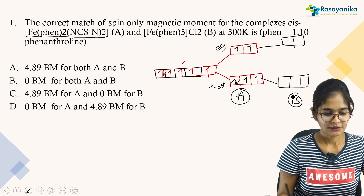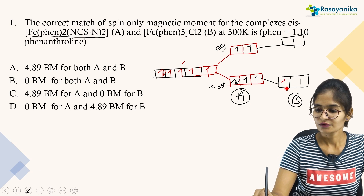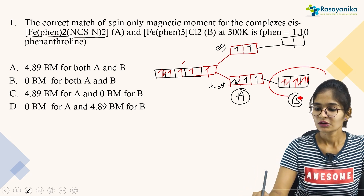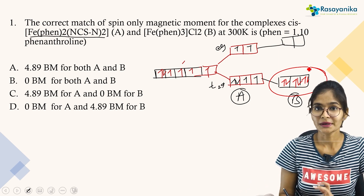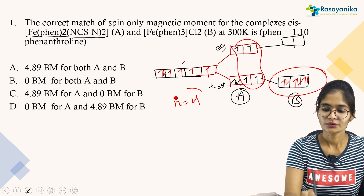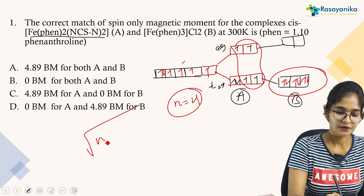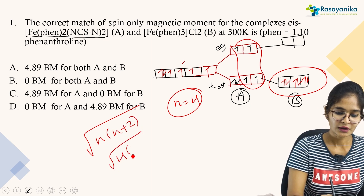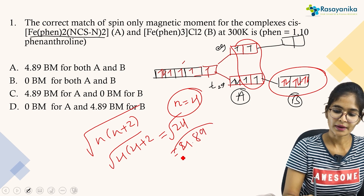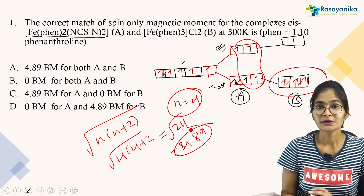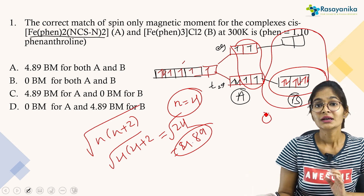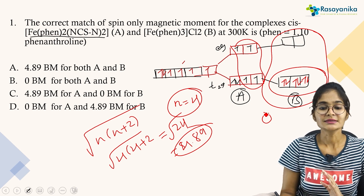Now for complex B, again you have 6 electrons to fill. The T2G orbitals are completely filled with all 6 electrons, leaving 0 unpaired electrons. For complex A (high spin, N = 4), the spin-only magnetic moment is √(4 × 6) = √24 = 4.89 Bohr magneton. For complex B with 0 unpaired electrons, the magnetic moment is 0 Bohr magneton.